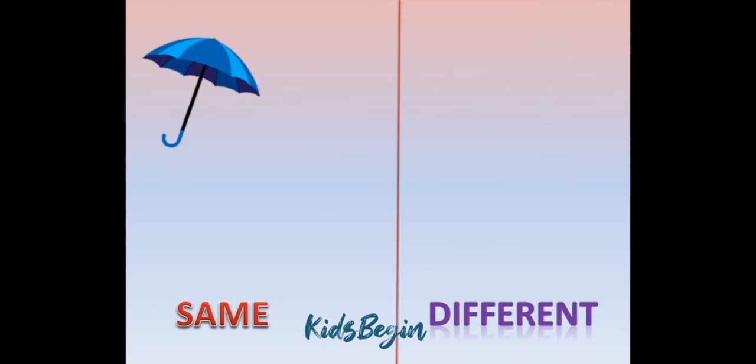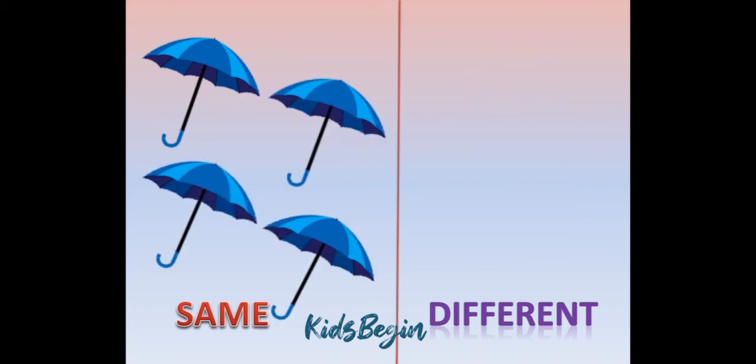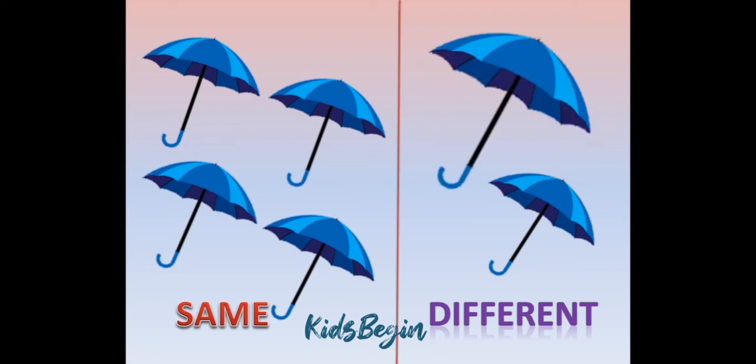Here we can see four same size, same shape and same color umbrellas, so they are same. But here, can you find out why these two umbrellas look different? Because one is small in size and the other is big in size, so they are different.